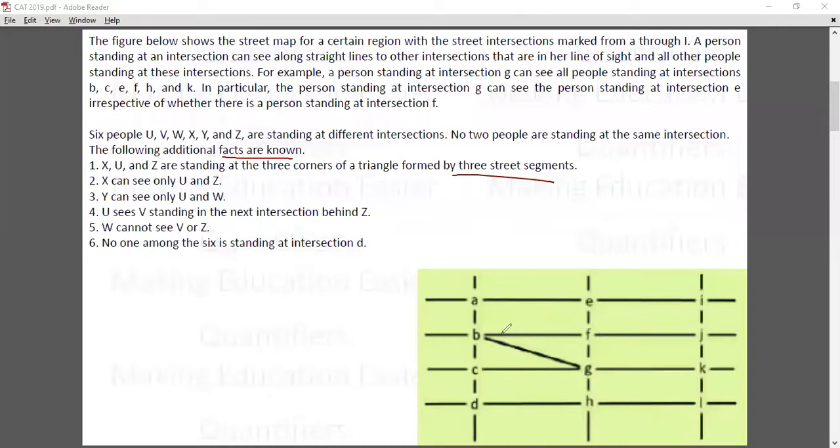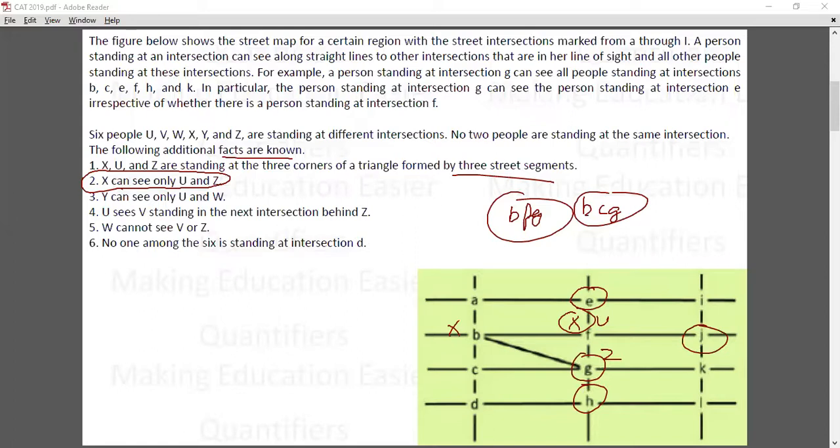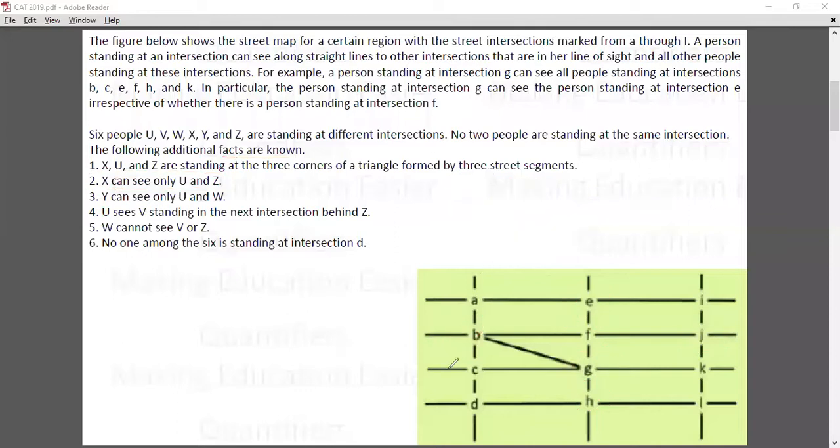So X, U, Z - anything is possible. Let's keep, let's take only one case, that X, U, Z. Why am I not taking X in between? So let's take X, U, Z - let's take this case and see how we proceed.